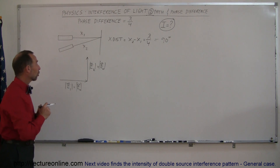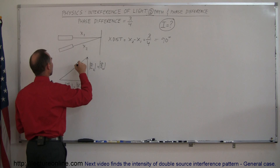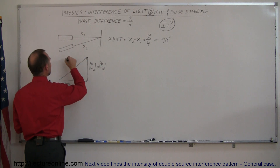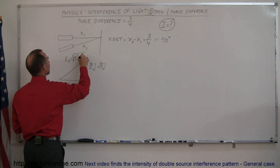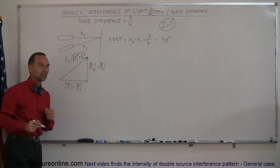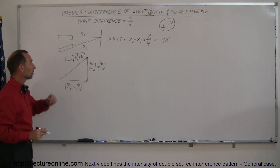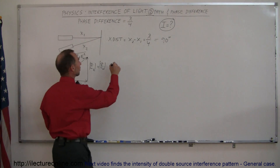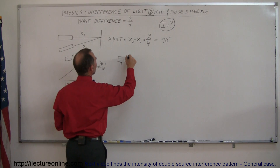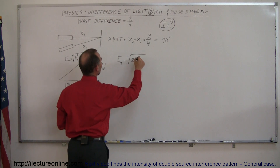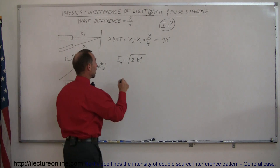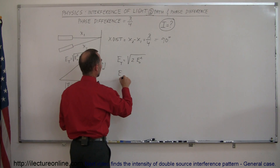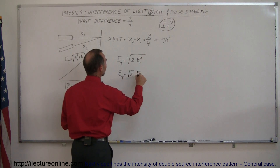The total oscillation E_total is simply the vector sum of those two, and the magnitude would be the square root of E₀² plus E₀² — the oscillation strength of the first wave plus the oscillation strength of the second wave. So E_total equals the square root of two times E₀ squared, and since the square root of E₀ squared is E₀, we get E_total = √2 · E₀.